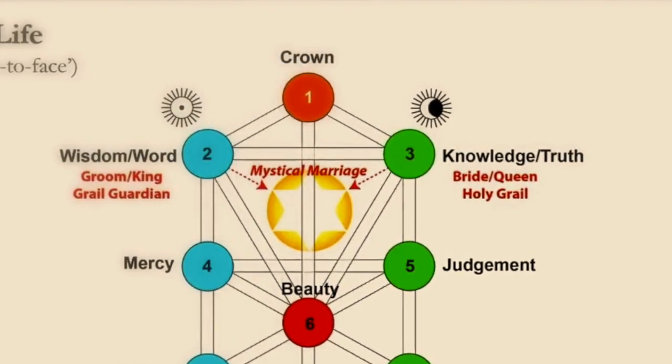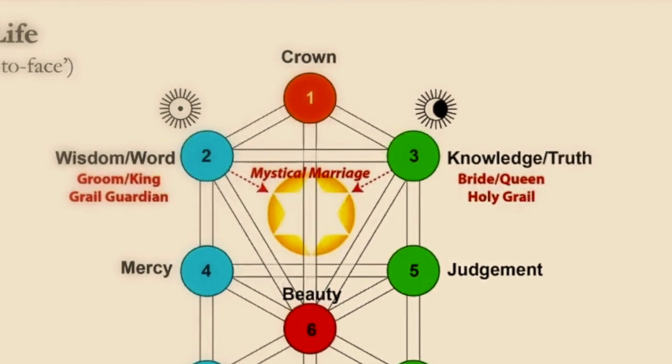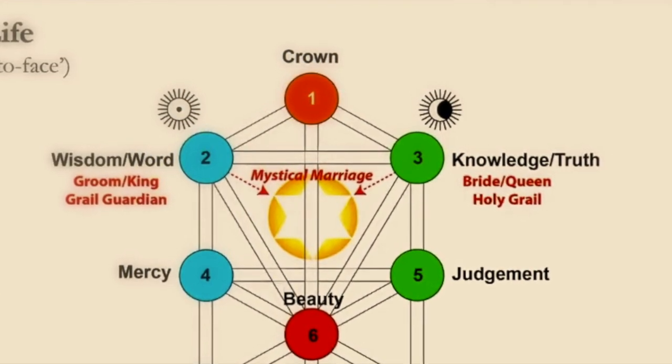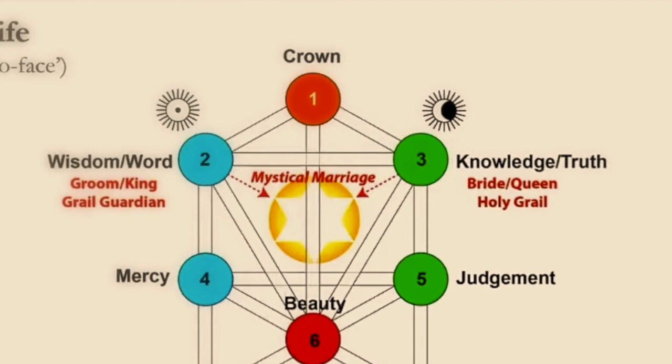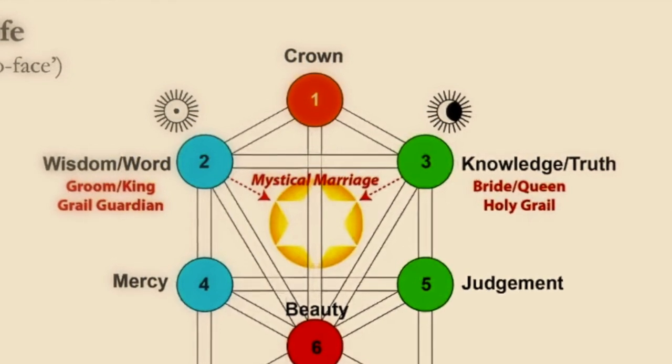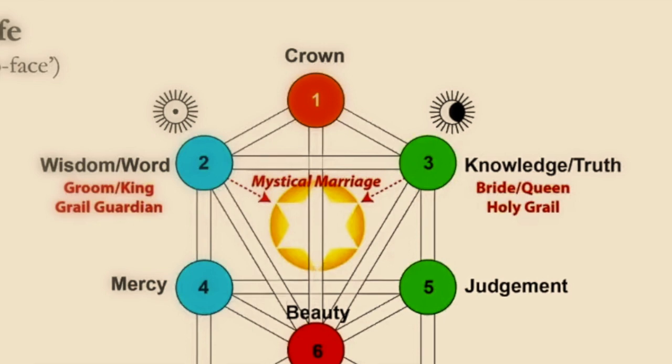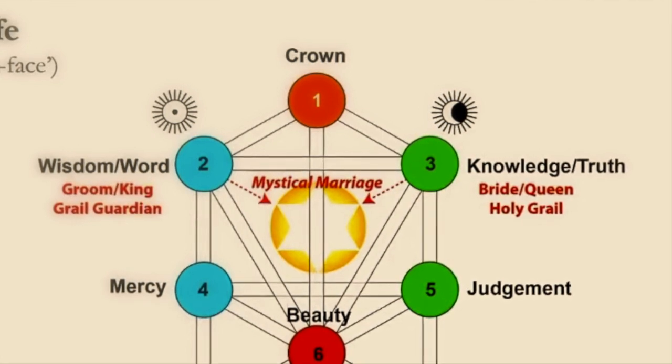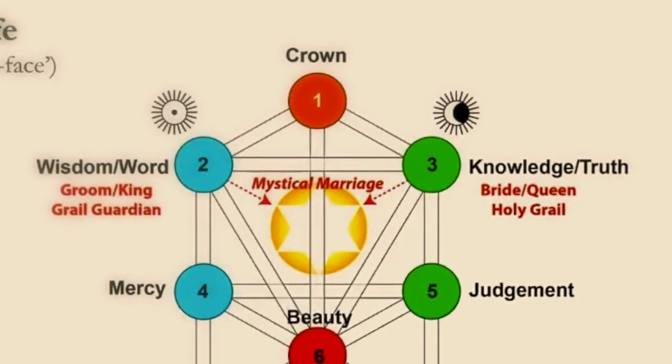To first achieve all this, one must become number 10, the root of the Tree of Life, and be properly prepared. And this is the initial sacrifice that must be made. And all this, Jesus acted out with his disciples.